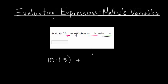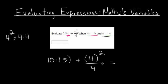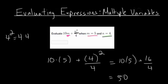Then we have n squared, so again I put it in parentheses. n is 4, so we get (4) squared, then divide that by 4. Now we simplify using order of operations — we square before dividing. 4 squared is 4 times 4, which is 16. So we have 10 times 5 plus 16 divided by 4. 10 times 5 is 50; 16 divided by 4 is 4. And 50 plus 4 is 54, so that's our answer.